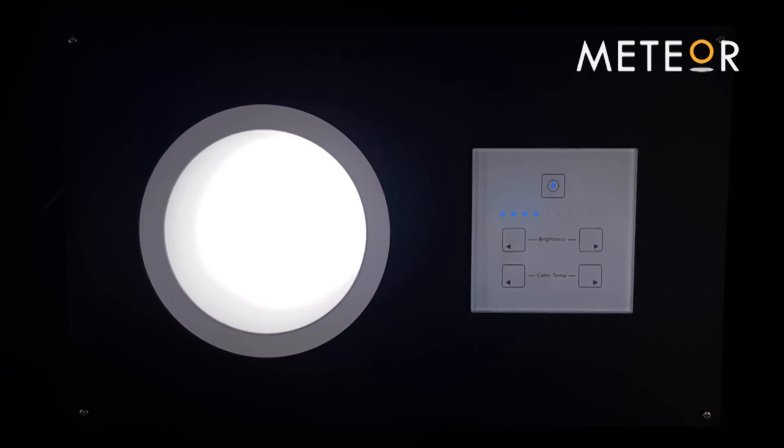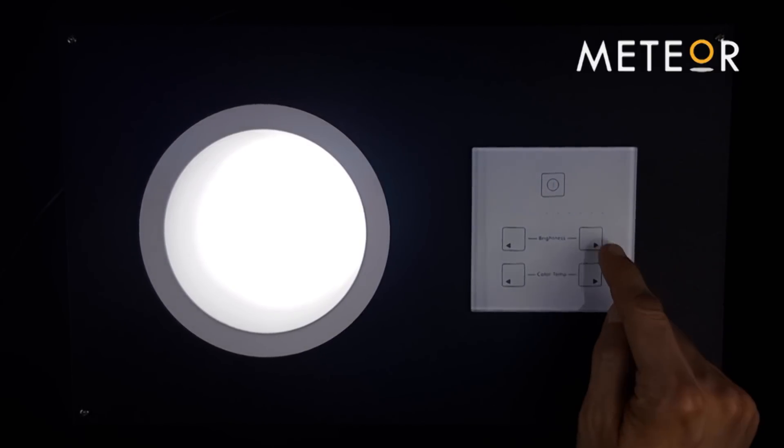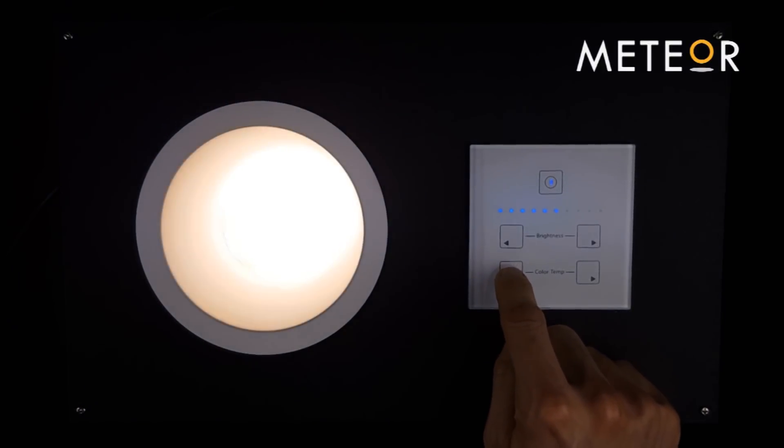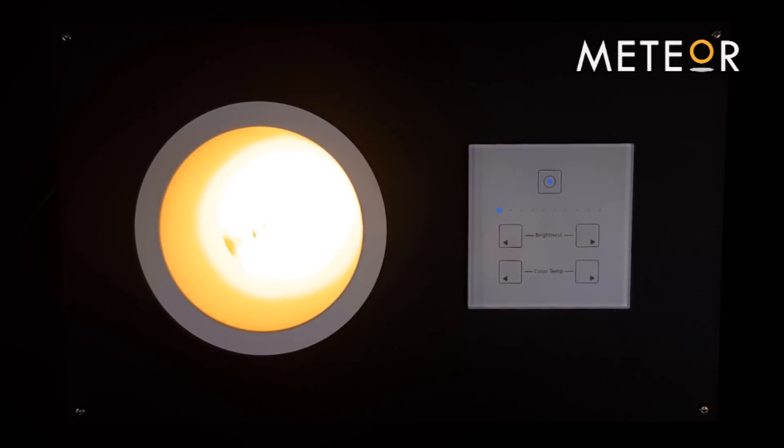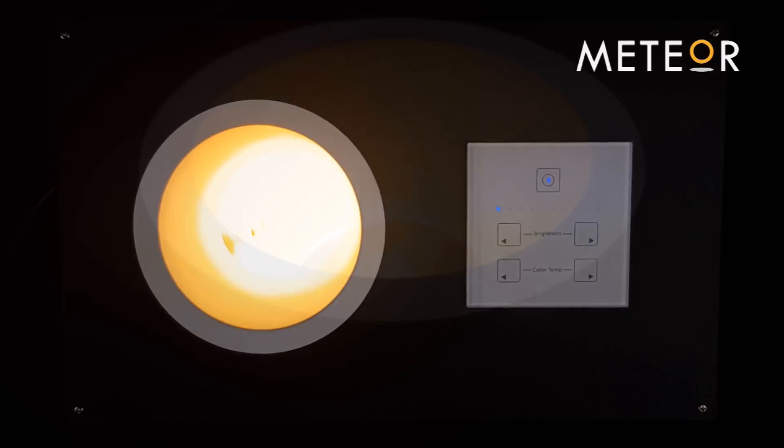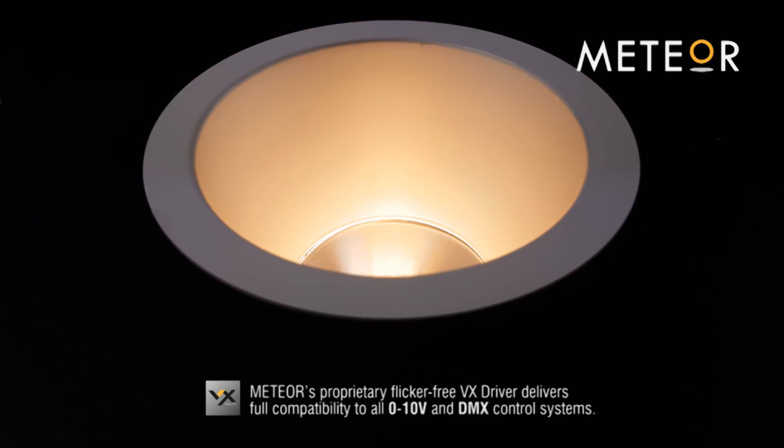This lighting fixture is being controlled with two 0-10-volt channels. The first channel controls the light's intensity from 0-100%, and the other channel controls the correlated color temperature ranging from cold light at 6500K to warm light at 2700K. This fixture also utilizes our proprietary VX driver which provides smooth dimming, combats flickering in video recordings, and is compatible with all 0-10-volt and DMX control systems that conform to industry standards.